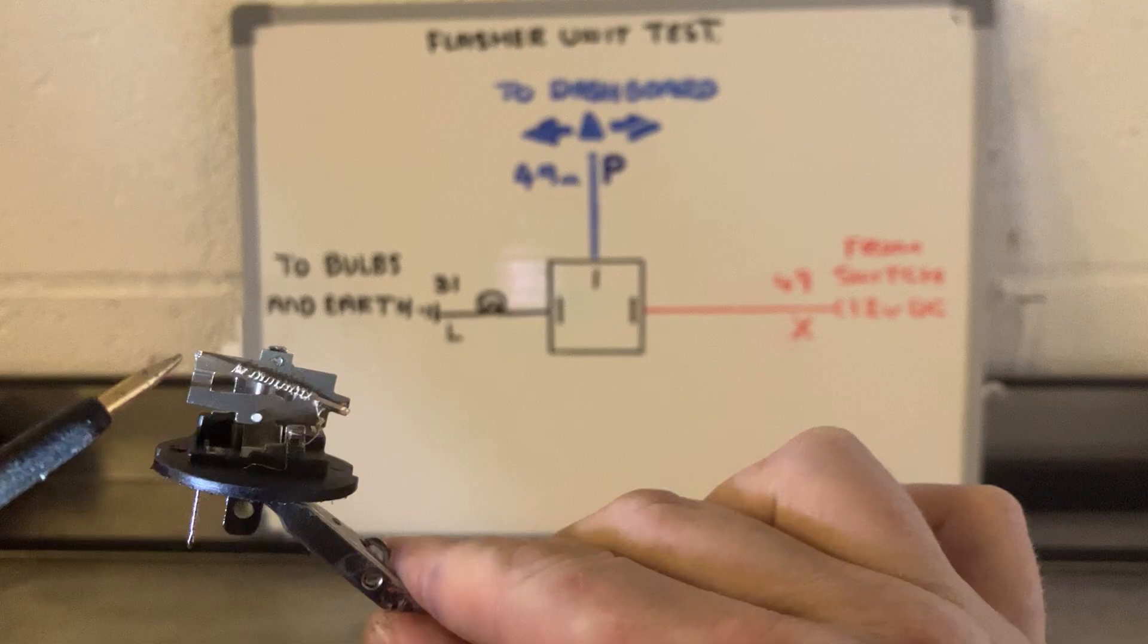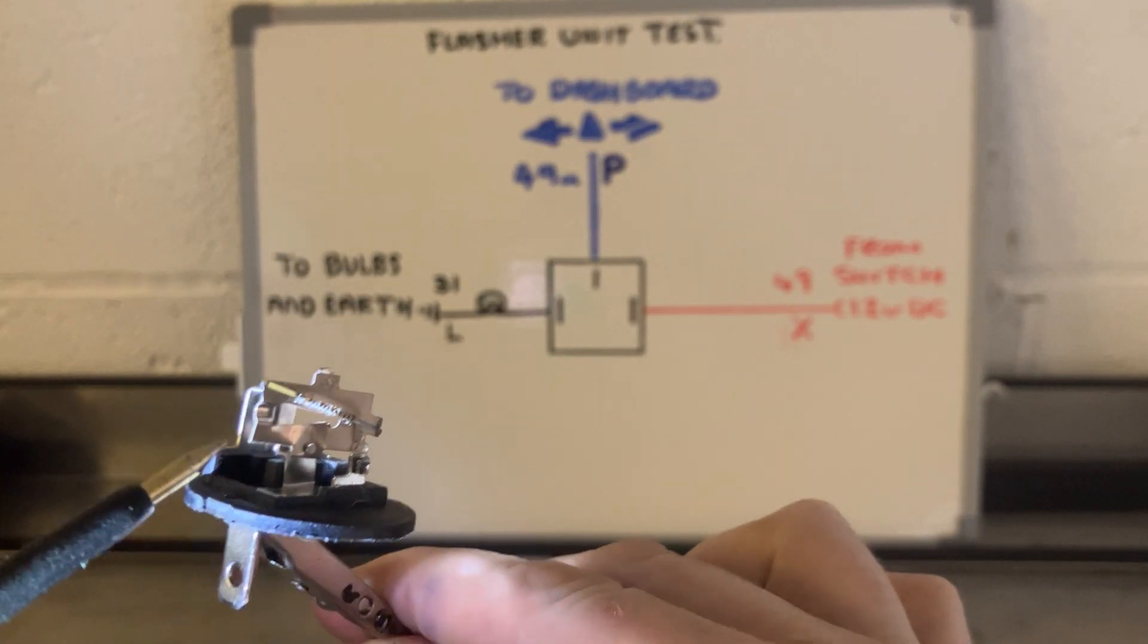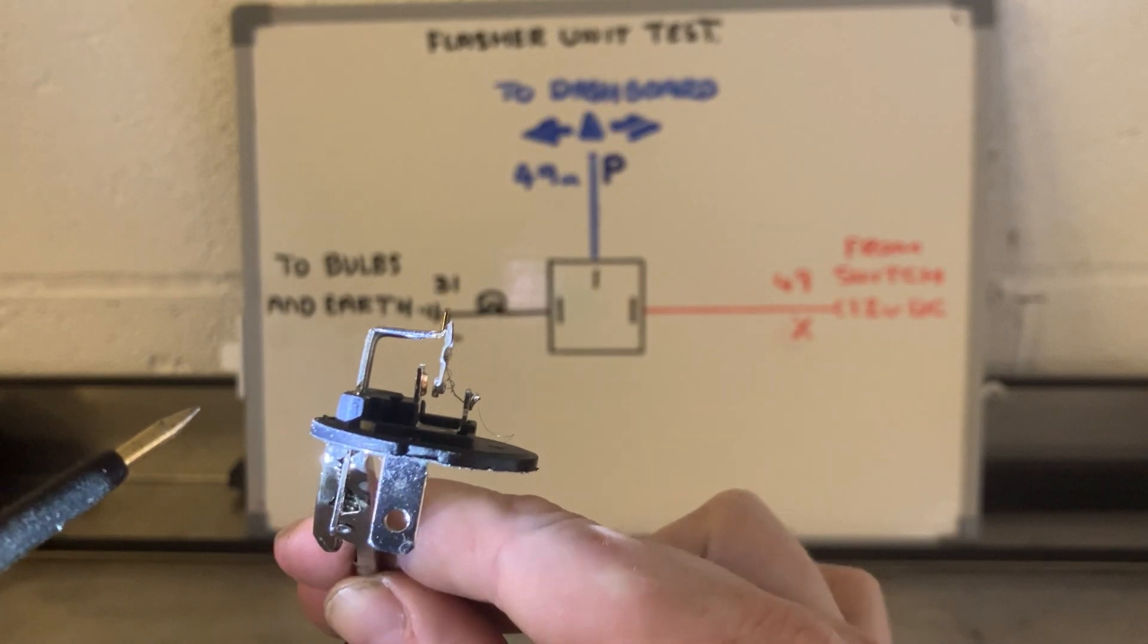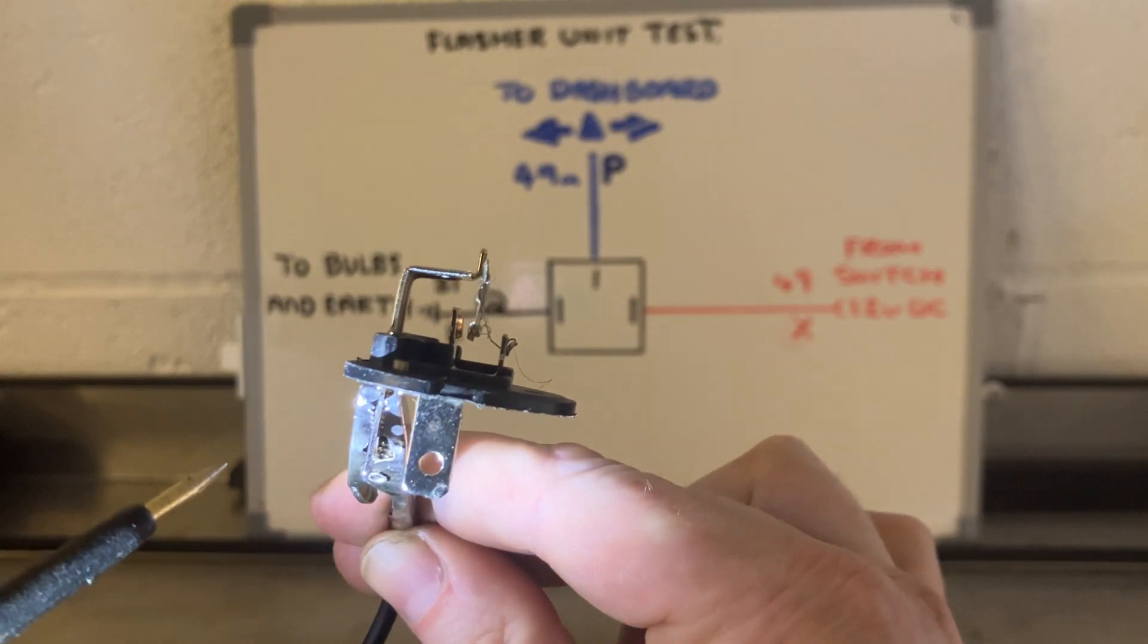So again, the heating element's the only path in this condition. It warms up. It makes the biometallic strip distort. Makes those two contacts connect. And then that gives the current an option of going through that route on towards the indicators.